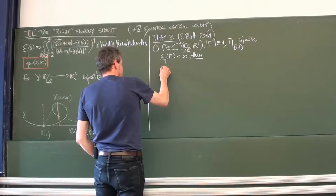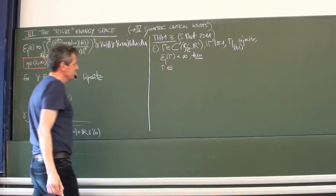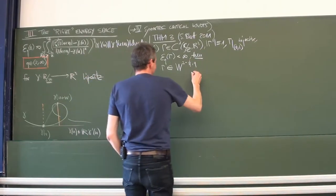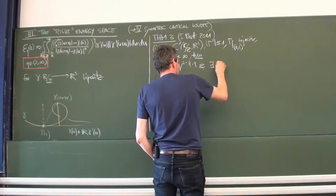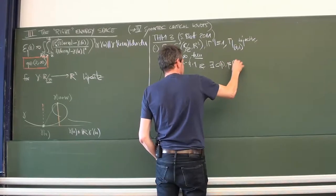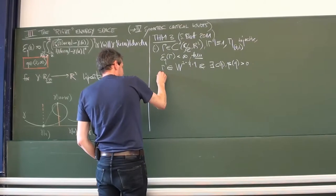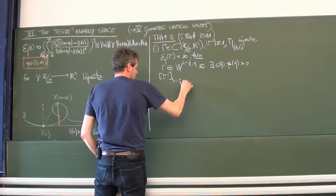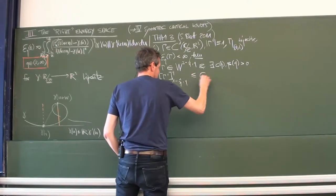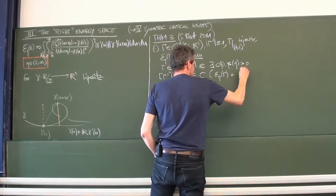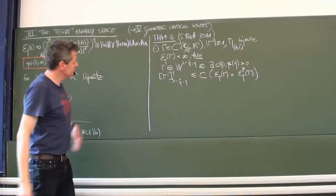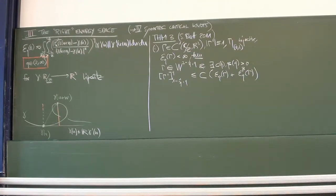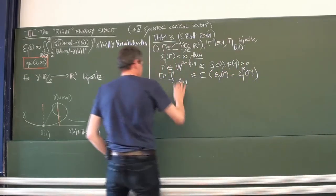The curve is in a space W with constants depending on Q, and there's an estimate: there are constants C and beta (both positive, depending on Q) such that a seminorm — which comes with the definition of this space — of the tangent is bounded to the power Q by this constant times the energy, and again the energy to a different power. You should think of this space as something between C^1 and C^2 — not C^2, but better than C^1. It's some fractional order of differentiability.